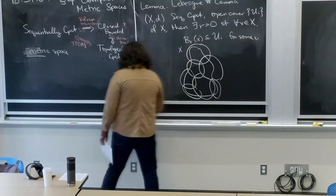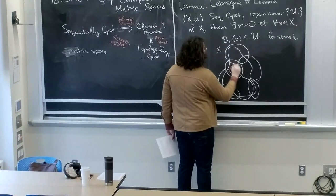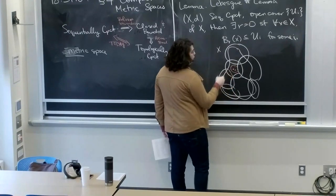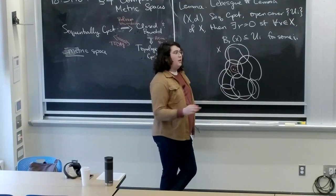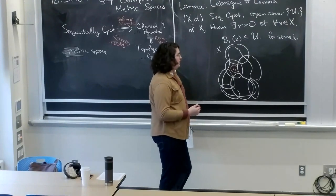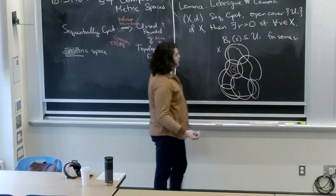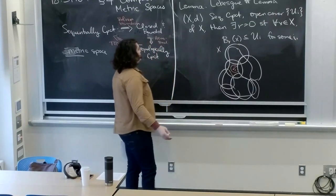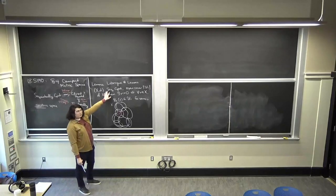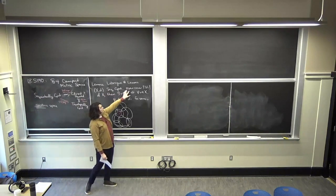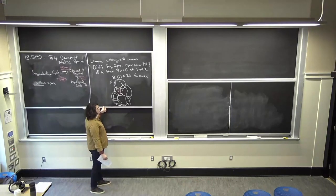For every x in X, we claim there exists a ball of radius r around x such that it's fully contained in one of these open sets. This should ring true if you want to prove topologically compact is the same as sequentially compact. What we're going to do in the long term is assume we're sequentially compact, take an open cover, and use this r to construct our conclusion. But first, we have to prove this fact, and the proof is going to be by contradiction.